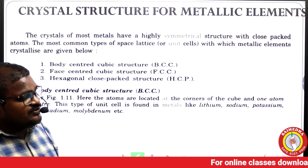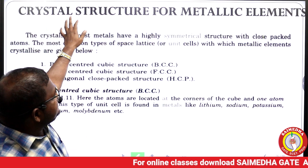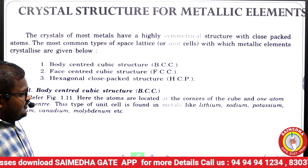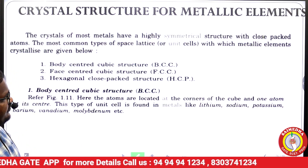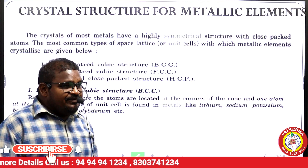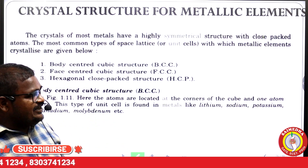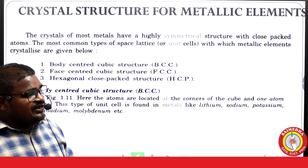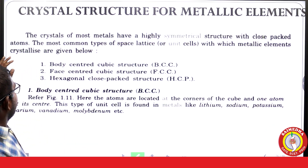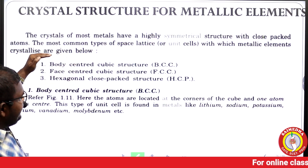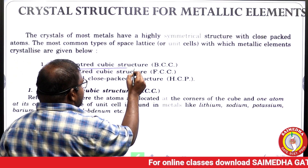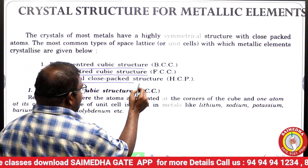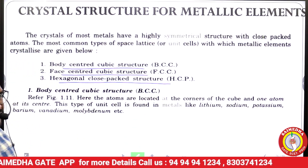Welcome to Sai Medha. Let us discuss crystal structure for metallic elements. In metals, the crystal structure is generally symmetrical — even if we interchange parts, it cannot be changed. There are three kinds of structures: body-centered cubic (BCC), face-centered cubic (FCC), and hexagonal close-packed (HCP) structure.